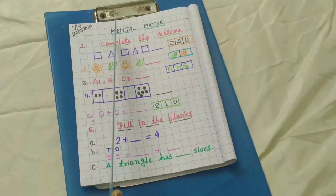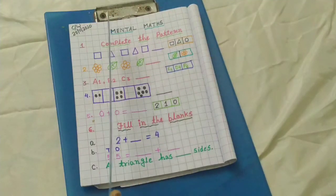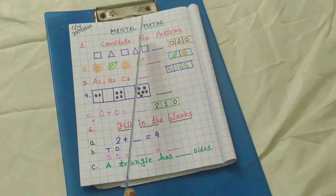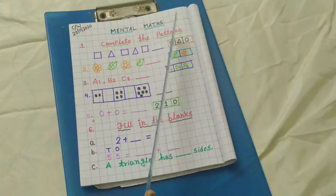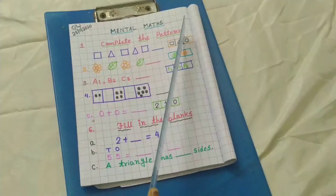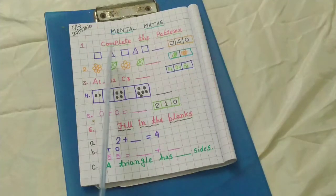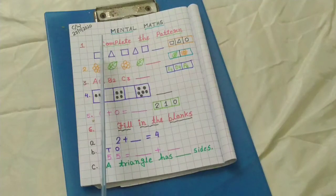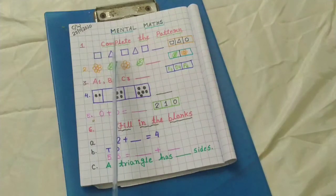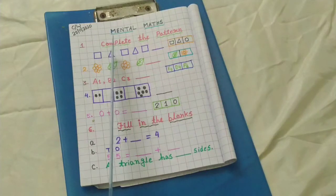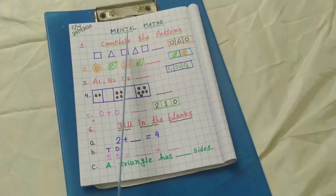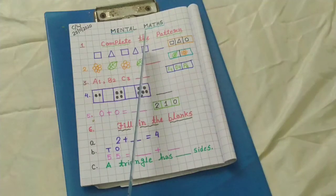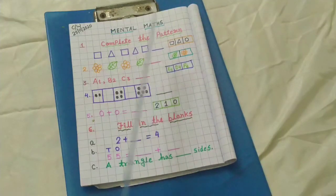My first question is complete the pattern. C-O-M-P-L-E-T-E complete, T-H-E the, P-A-T-T-E-R-N pattern. You can see here I have drawn some shapes. First I have drawn square, then triangle, again square, then triangle, then square, and then I have given one dash.